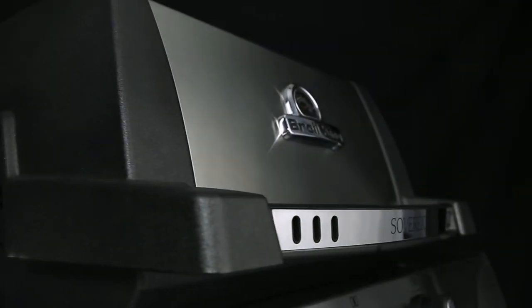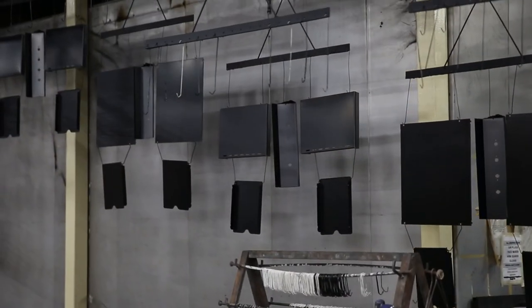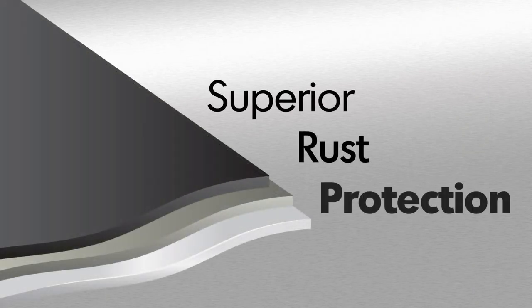Broil King uses high-quality stainless steel for many components. All other steel is zinc-coated and further protected by an epoxy paint that is baked on through a powder coat process. This premium triple coat process provides superior rust protection.